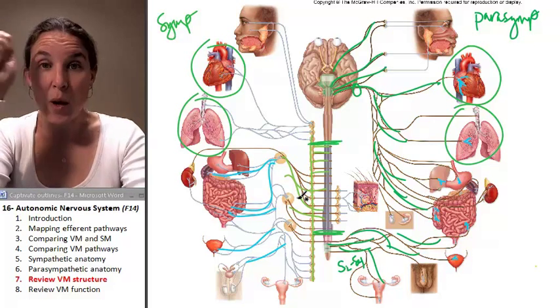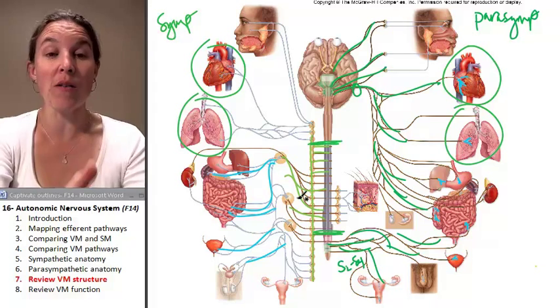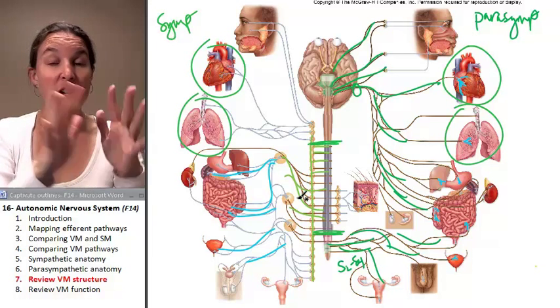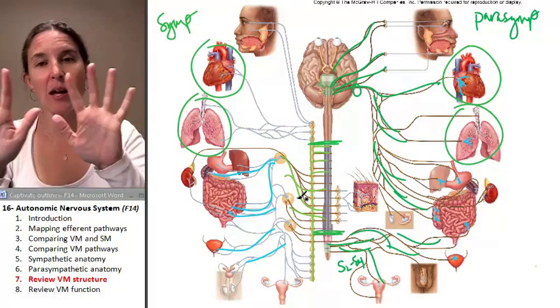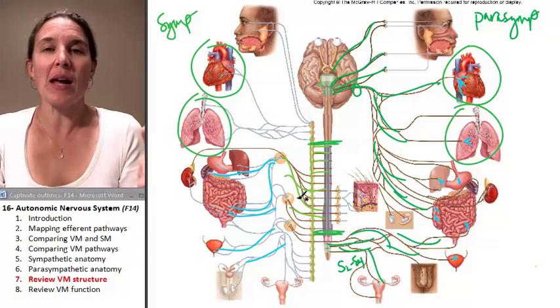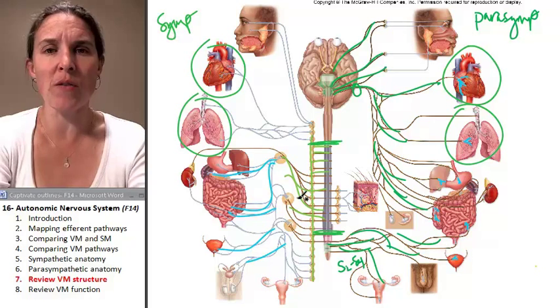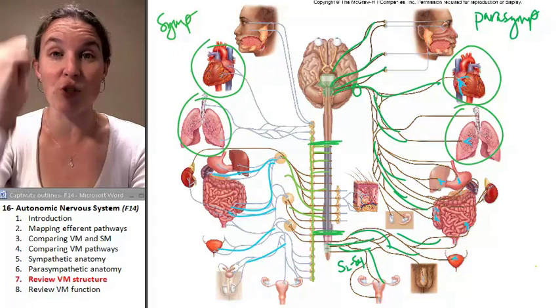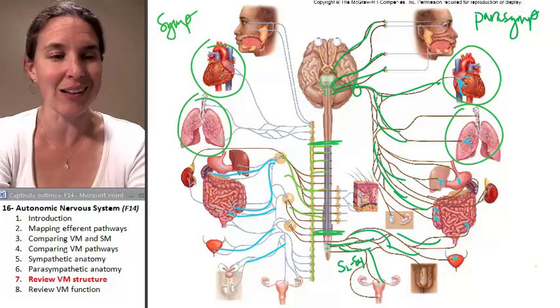We're going to wrap it up with a review of visceral motor function. We've got sympathetic and parasympathetic structure. We just reviewed it. We're cool. Now let's just do a quick overview of their different functions. And then we're going to do cha-ching and call it good.